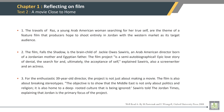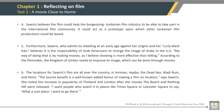The fourth sentence of paragraph 2: The film Fails the Shadow is the brainchild of Jackie Ovis, an Arab-American director, born of a Jordanian mother and Egyptian father. The fourth sentence of paragraph 3: For the enthusiastic 39-year-old director, the project is not just about making a movie. Fourth sentence of paragraph 4: Suarez believes the film could help the burgeoning Jordanian film industry to be able to take part in the international film community.